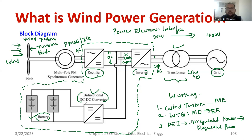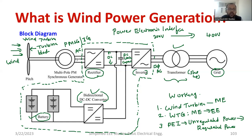You can do many projects based on this block diagram — for example, the design of a bidirectional DC-DC converter, which is a very good project. There is various scope for interdisciplinary students. To summarize: starting from wind, then wind turbine, wind turbine generator, power electronic interface, transformer, and the output is connected to the grid. A battery bank can also be used for backup with a bidirectional DC-DC converter.